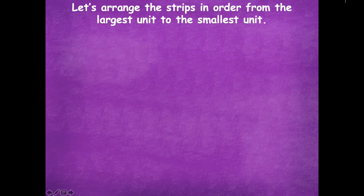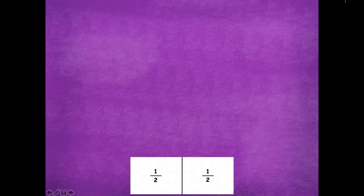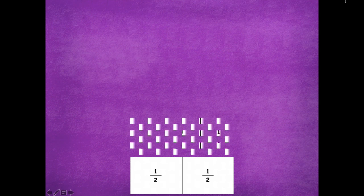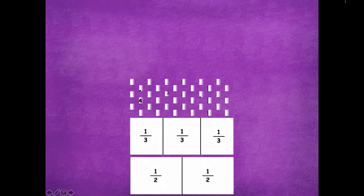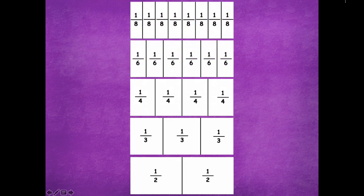So let's arrange these strips in order from largest unit to the smallest unit. Okay, so here I have one half, then one third, one fourth, one sixth, and one eighth.